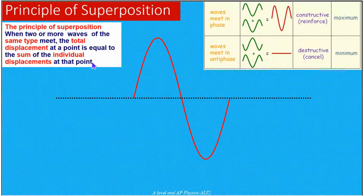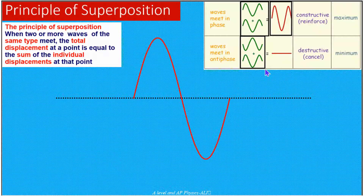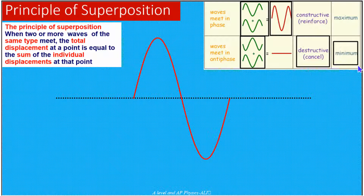Let's try to understand a little bit about what is constructive interference and what is destructive interference. Constructive interference simply means that when two waves meet and they are in phase, they will interfere constructively and the resultant displacement will be greater — meaning the resultant displacement will be maximum, as you can see here. On the other hand, when two waves are out of phase and they interfere with each other, they will cancel each other, and that interference we call destructive interference. The resultant displacement will be minimum.